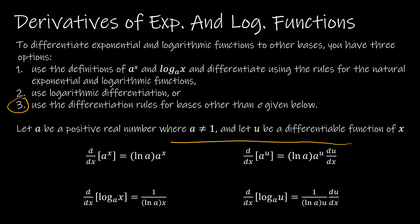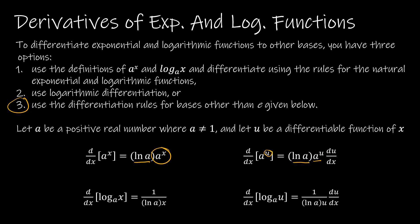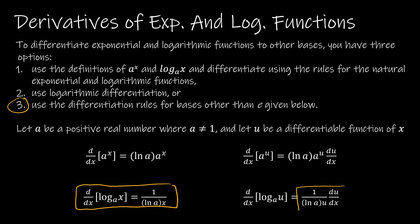For a^x where x is not a function, the derivative is the natural log of a times a^x. If it's a^u, where u has its own derivative, it's still the natural log of the base times a^u, then multiplied by the derivative of u. For a logarithmic function with a base other than e, the result is 1 over the natural log of the base times x, or 1 over the natural log of the base times u, multiplied by the derivative of u.